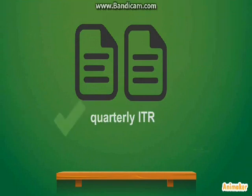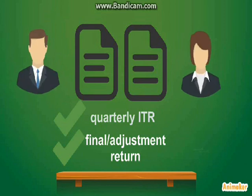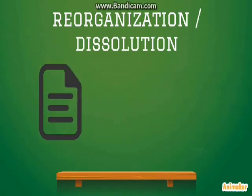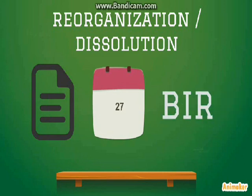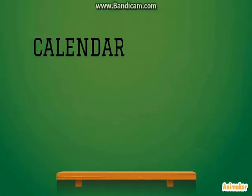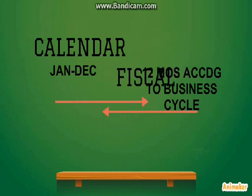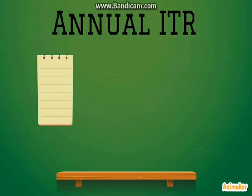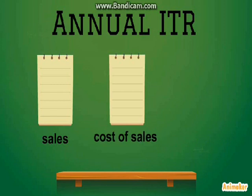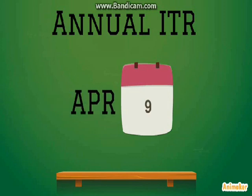All corporations subject to tax, except foreign corporations, must submit a duplicate of quarterly ITR and a final or adjustment return, filed by a principal officer and sworn by the treasurer. ITR for corporate dissolution or reorganization must be filed within 30 days to the BIR commissioner after the adoption of a plan. A corporation may employ either a calendar year or fiscal year, and the approval of the commissioner is needed to change an accounting period. The annual income tax return contains the accumulated report of sales, cost of sales, and allowable deductions for the whole taxable year, and must be filed before April 15th of the succeeding year.